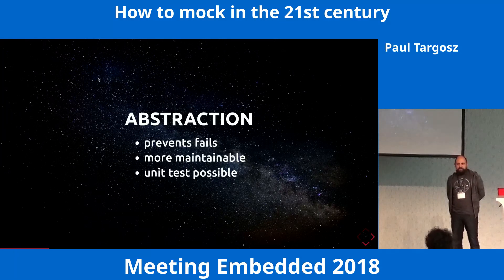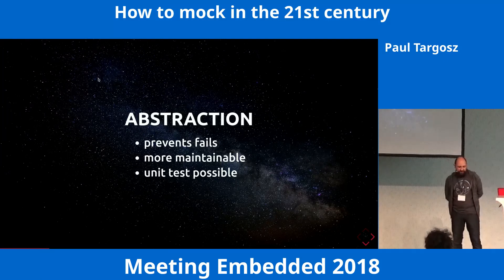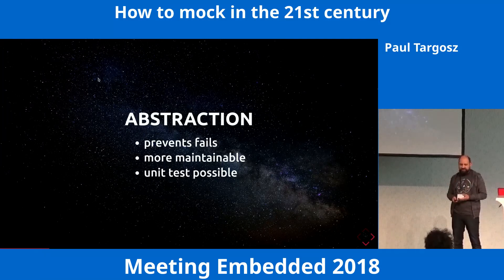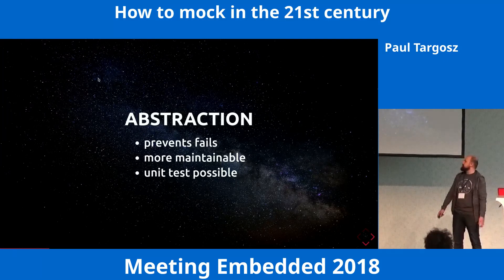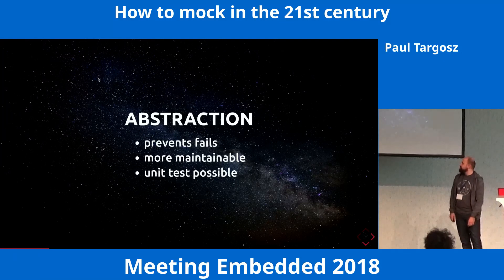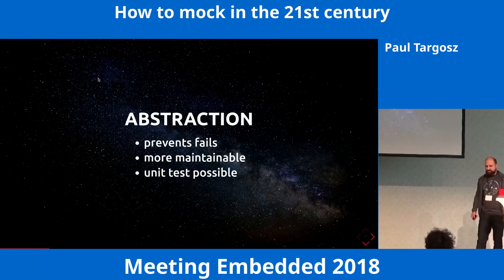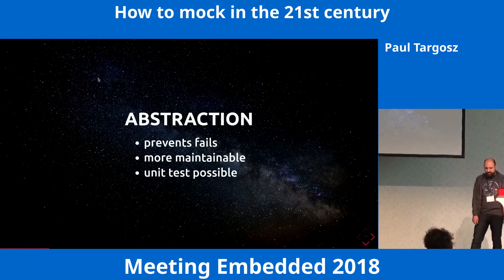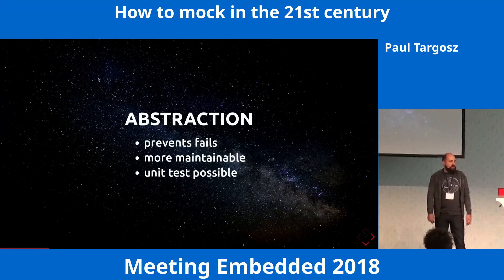Code is more maintainable because if you can't even detect an error, you have problems finding it. If someone else is reading your code and sees some macro, what is this doing to init SPI? SPI is much more readable as a function, and if you have abstractions, unit tests are much easier to implement.